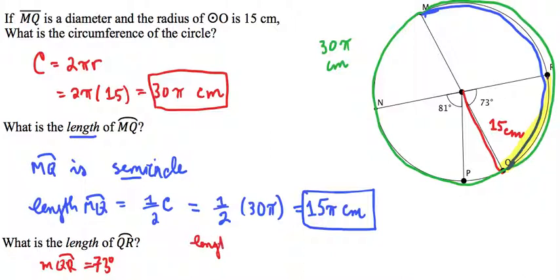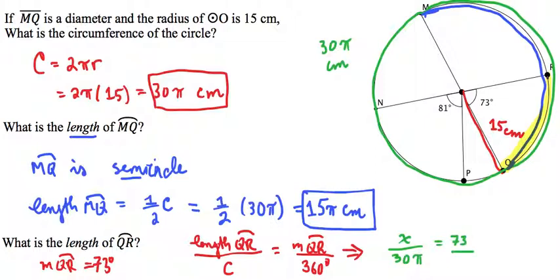Therefore, we can create a proportion. The length of QR over the circumference of the circle must be equal to the measure of QR over 360 degrees. So we're comparing the measure of the arc over the measure of the circle to the length of the arc over the length of the circle. So the length of QR, we'll call it X, over the circumference, which was 30π centimeters, is equal to the measure of QR, which is 73, over 360.